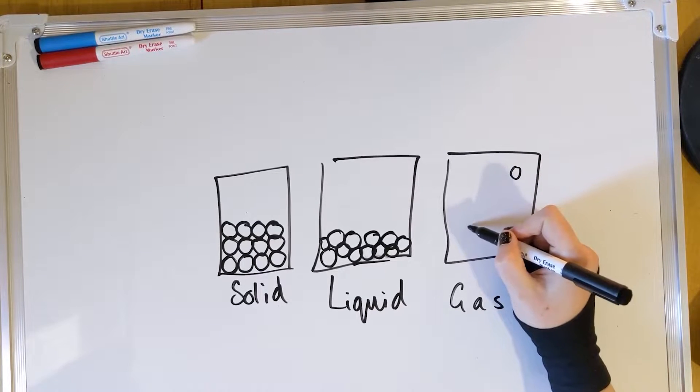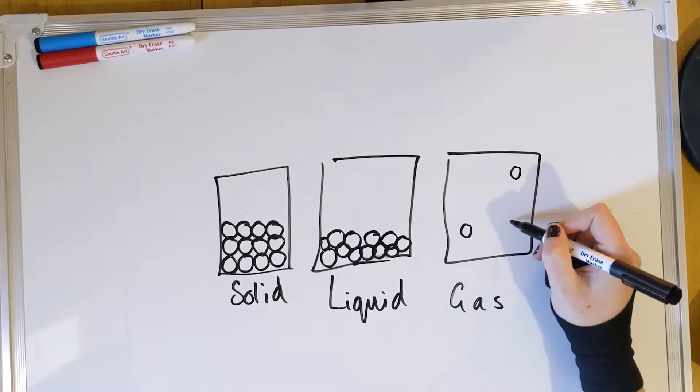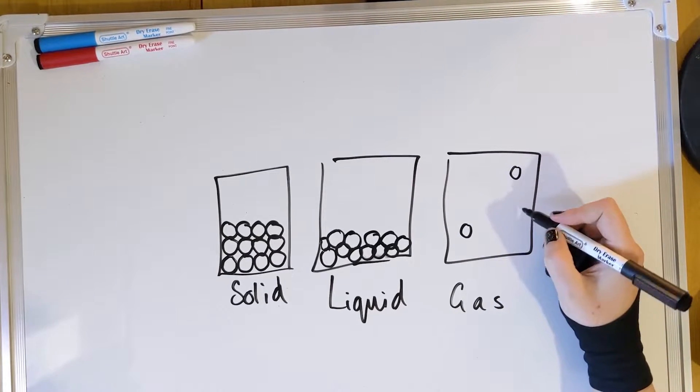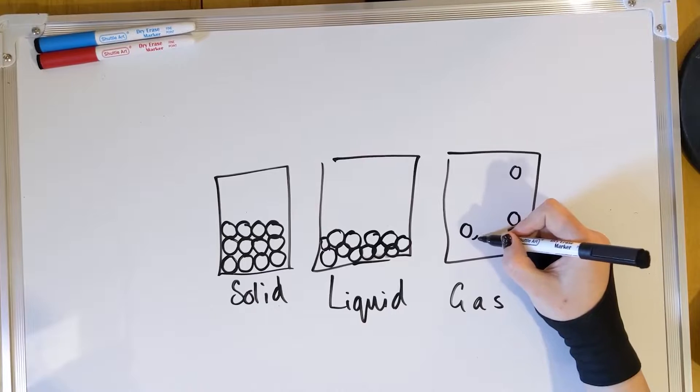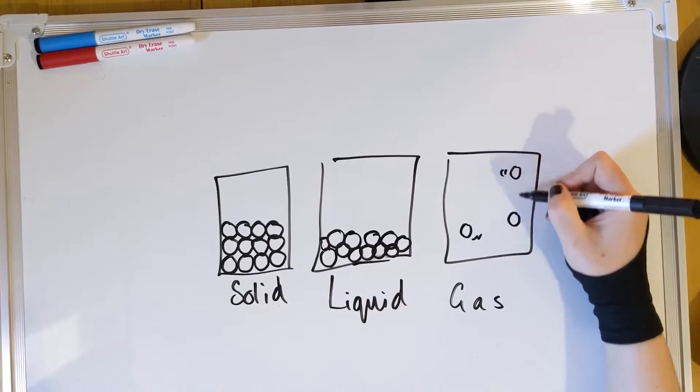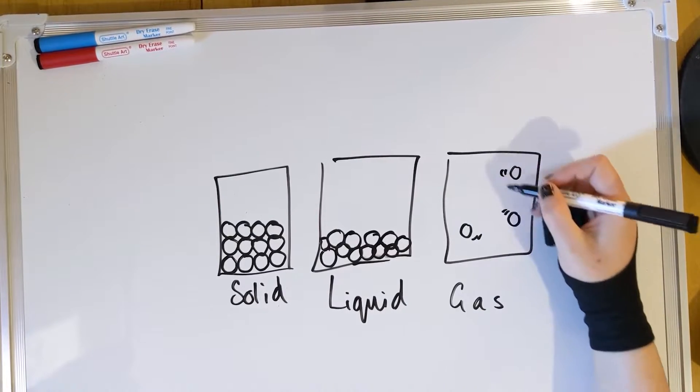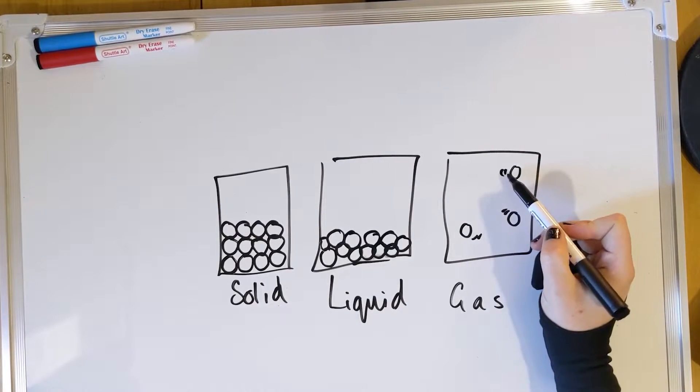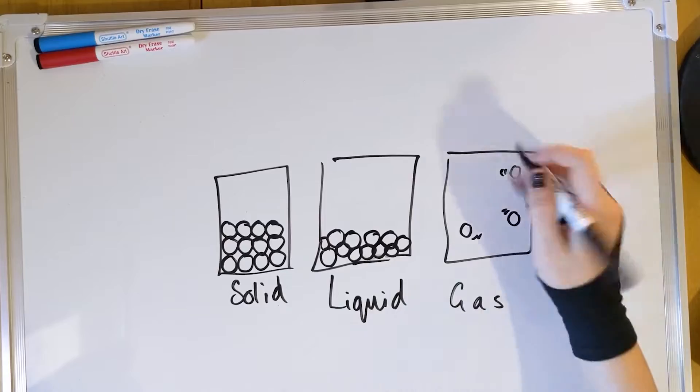With a gas, particles are really spaced far apart, like we are all doing hopefully now with social distancing. The particles have lots of energy, so the squiggly lines just show those particles are zipping around everywhere. They can come into contact, but they take up the space of the container.